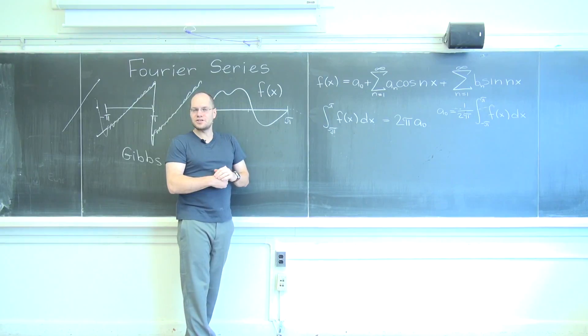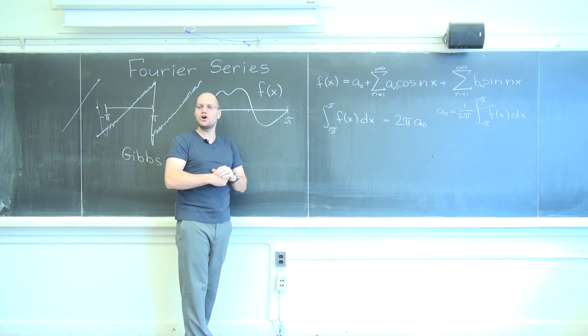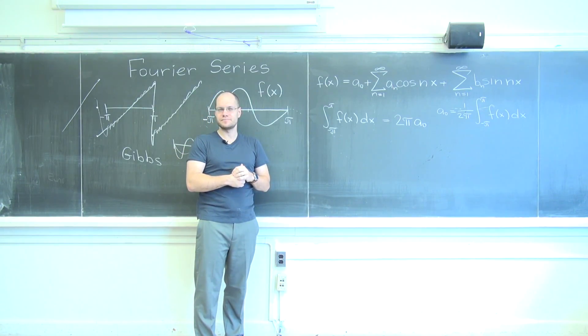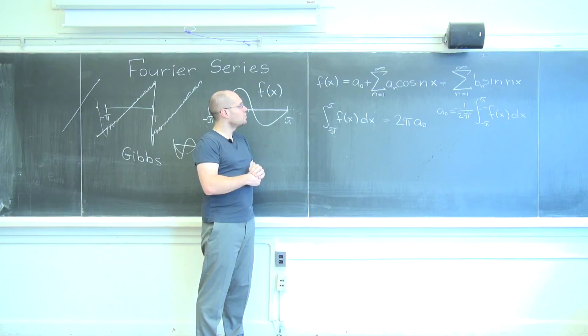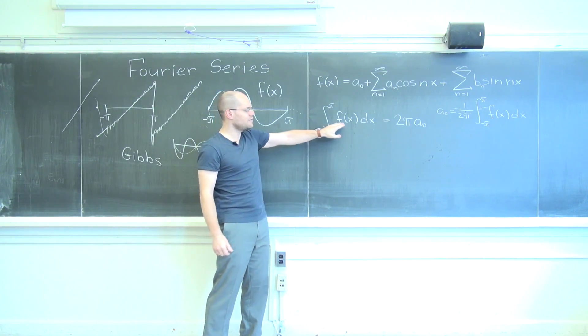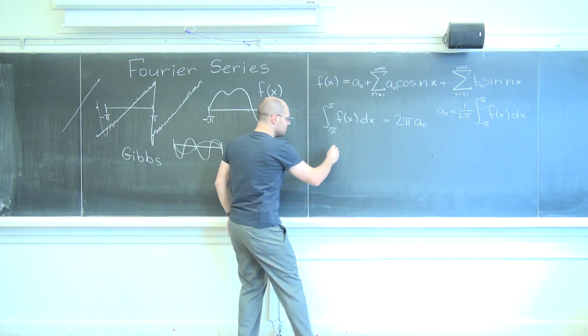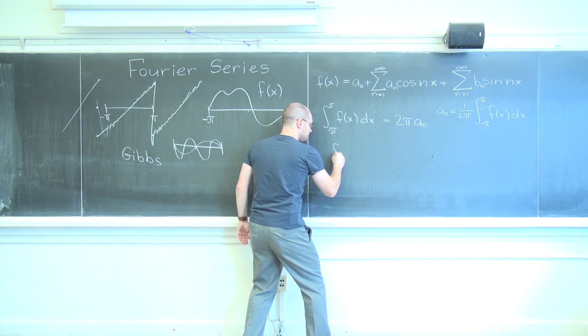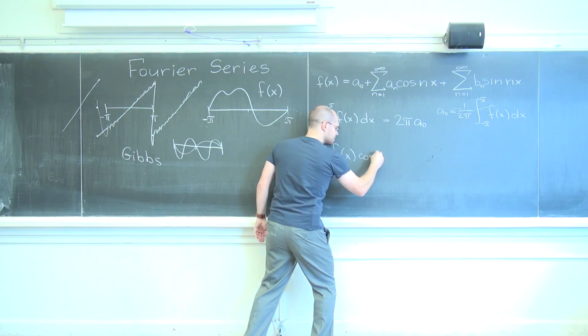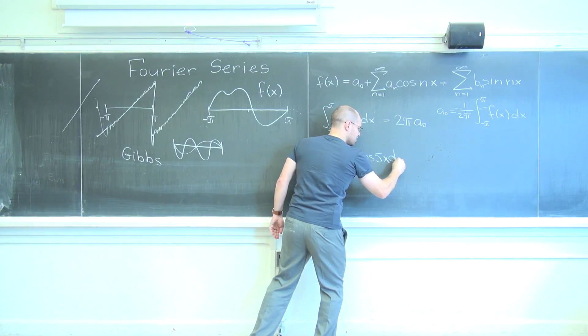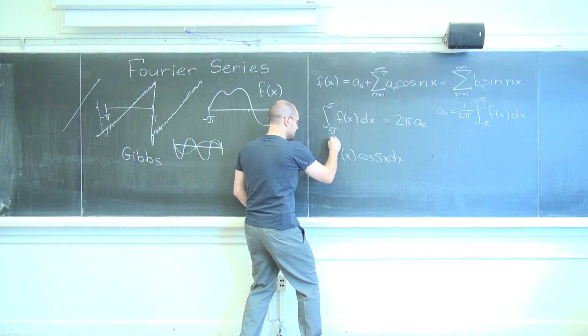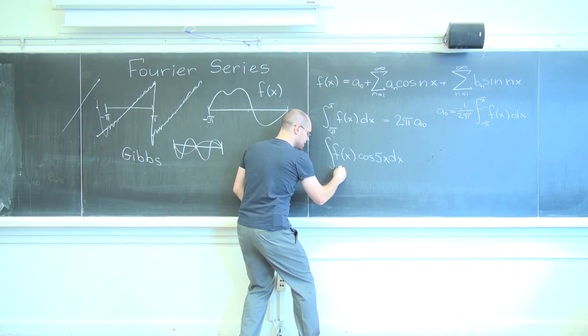Let's go after, just for specificity, a5. Let's go after a5. What I will suggest we do, and you'll see in a moment why it works, is instead of finding this integral, I would suggest multiplying f of x by cosine of 5x. You will see in a moment why it makes sense. Cosine of 5x. Let's once again integrate it from minus pi to pi.